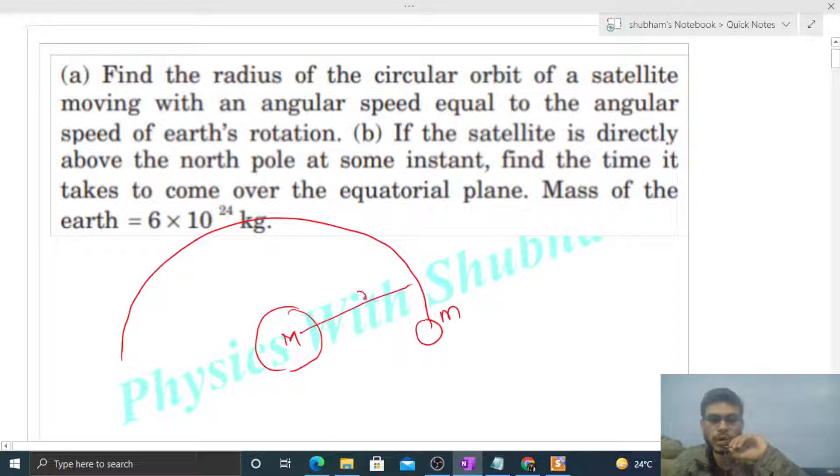Now how to find the angular speed of this satellite? The gravitational force of attraction by the Earth on this satellite will be the necessary centripetal force for this satellite. This gravitational force provides the necessary centripetal force to move in this circular orbit of radius small r.